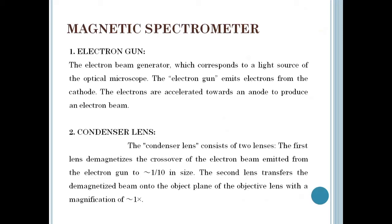The second part is the condenser lens, which consists of two lenses. The first lens demagnifies the crossover of the electron beam emitted from the electron gun to approximately 1/10 in size. The second lens transfers the demagnified beam onto the object plane of the objective lens with a magnification of approximately one.